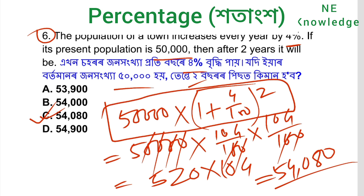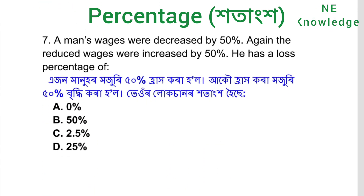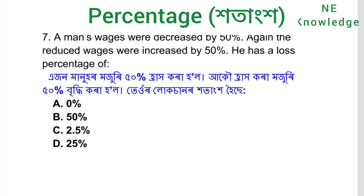The formula is P into 1 plus R by 100, all to the power N, where N is the time period. Next, question number seven: a man's wages were decreased by 50 percent.